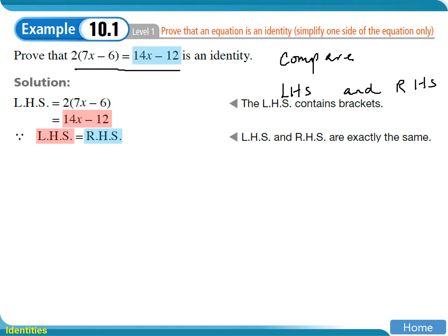In this case, you may find that you can start from the left-hand side, which is 2 times 7x minus 6.